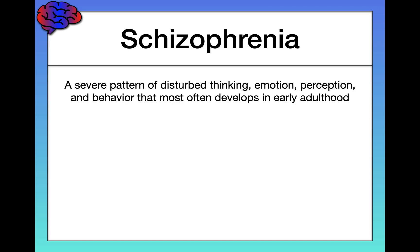Rather, schizophrenia refers to a psychological disorder characterized by major disturbances in cognition, emotion, perception, and behavior. And these disturbances tend to be severe. The symptoms of schizophrenia often impair a person's ability to function day to day, even to do simple things, and can frequently result in hospitalization. The lifetime prevalence of schizophrenia is about 1%, meaning that 1% of people in the world will meet the criteria for the disorder at some point in their lifetimes.